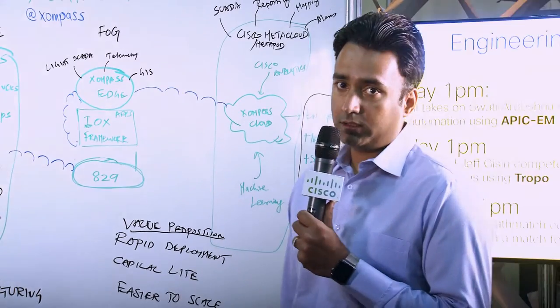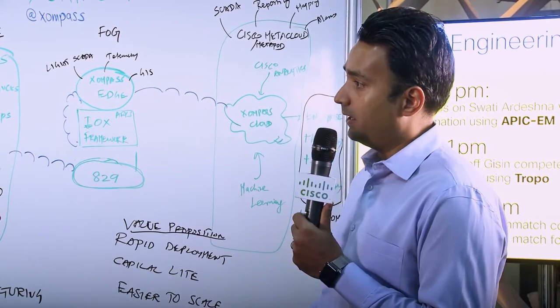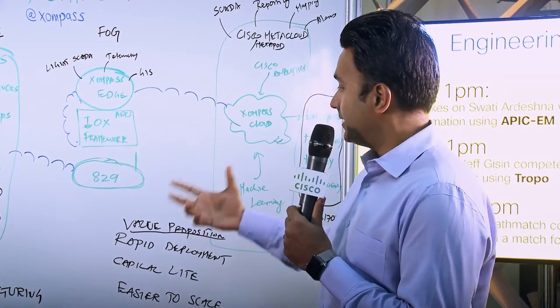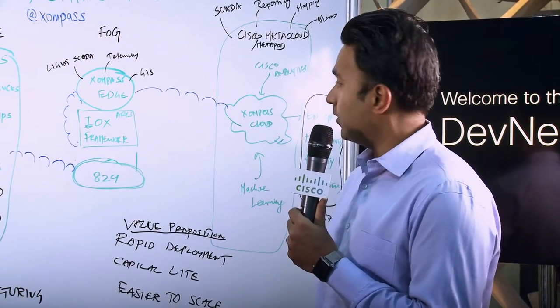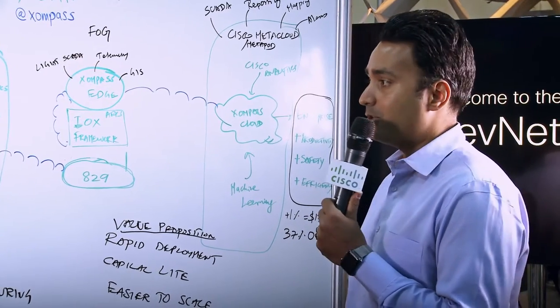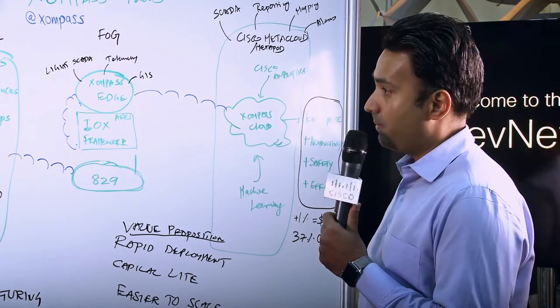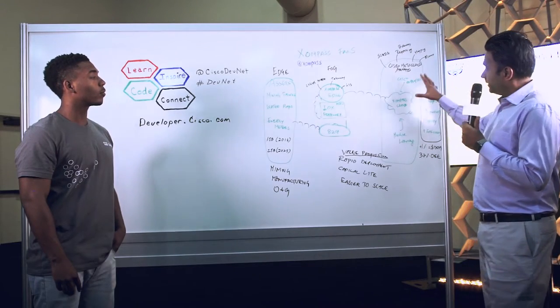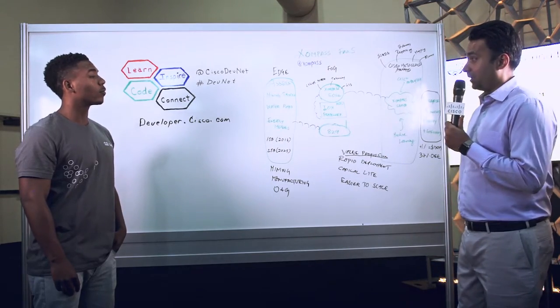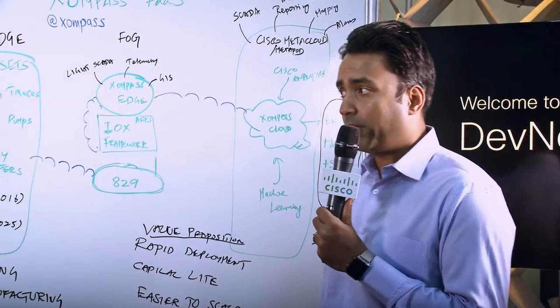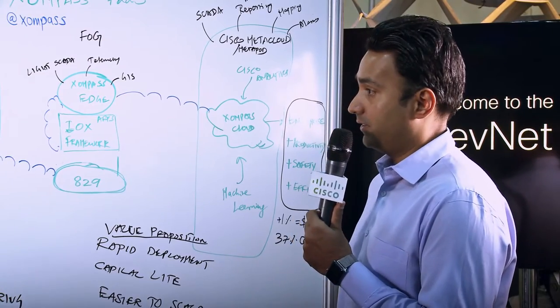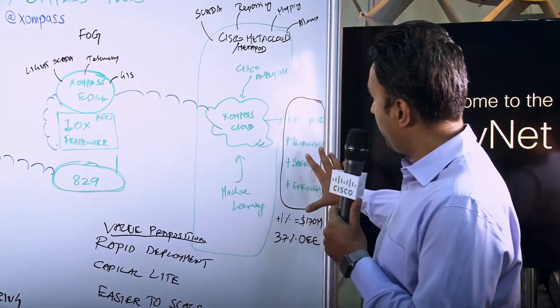And then we have this product called the Compass Edge, which runs the light skater, which provides context to these assets, telemetry and GIS and the fog level. And then we take that data into what we call the Compass Cloud, as I've shown here. And then there we use a variety of services, like Cisco Analytics, Machine Learning. And it's all part of the Cisco Metacloud, the Metapod. And the great thing about this is we can do this very scalably at a fraction of the cost of what's done in the industry today. Today it costs about $40,000 a point to connect to these assets. We believe we can do that at $400 a point.